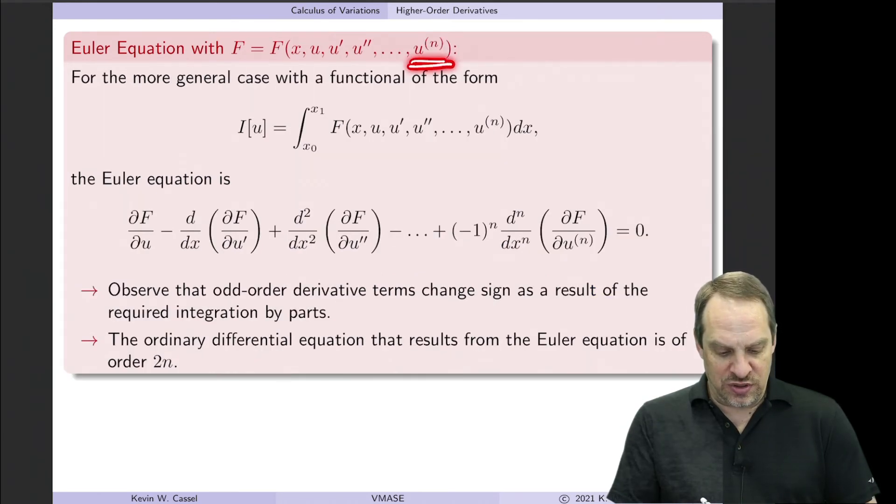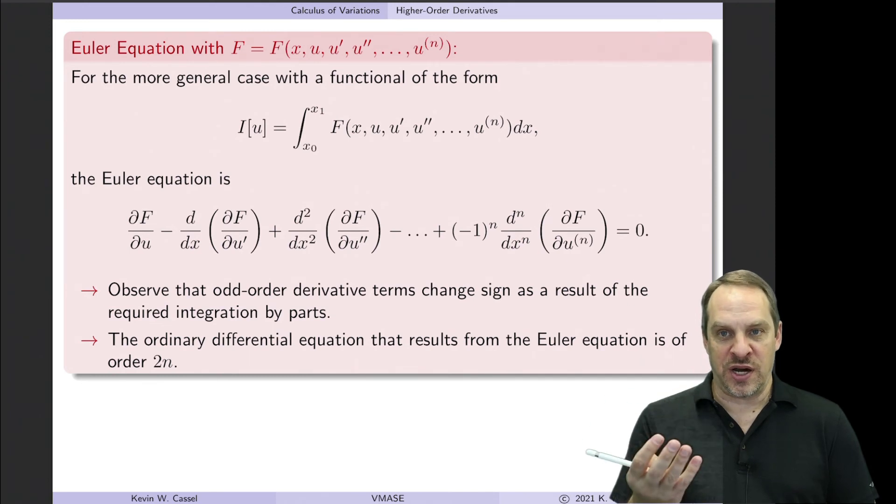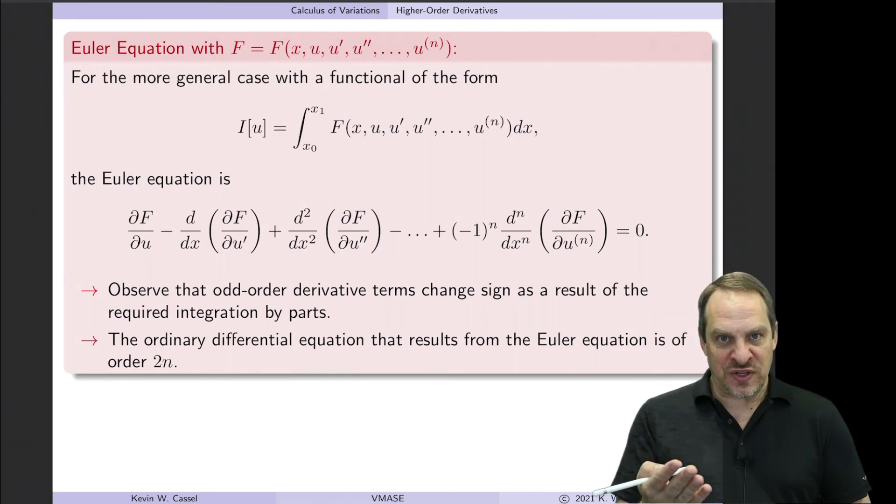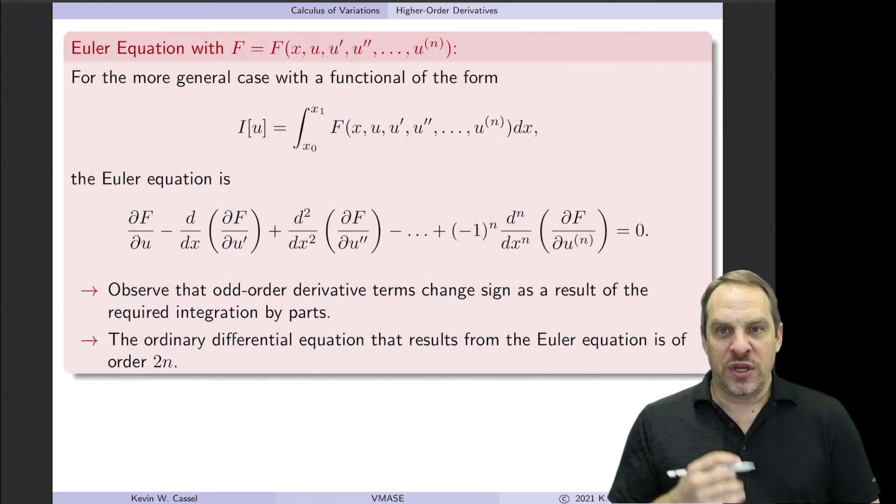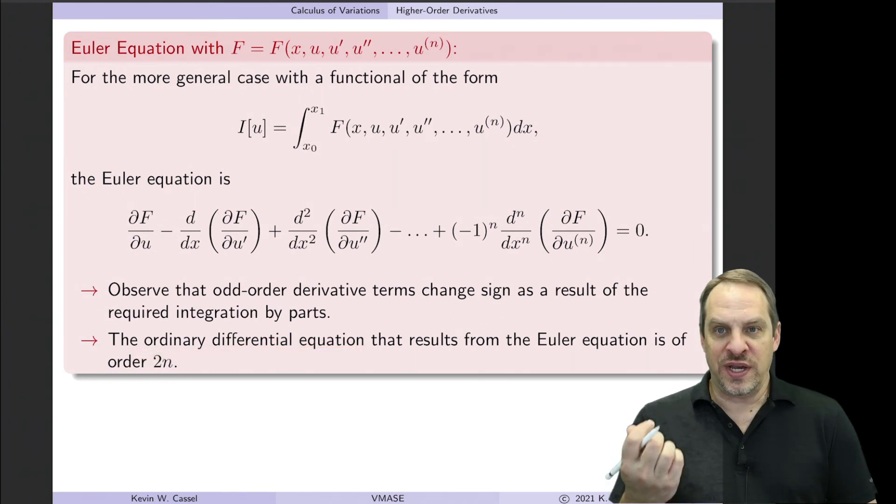Now, you can extend that to any order derivatives in your functional, the nth order derivative. And you just keep getting additional terms that correspond to those derivatives. So here's that last one for the nth derivative. And you get nth derivative here. And then this minus 1 to the n does the alternating signs. If it's an odd order derivative, then you have a negative sign because you've done an odd number of integration by parts. If it's an even order derivative, then you get a plus sign because you've done an even number of integration by parts. And you'll notice in all of these situations, the order of the ordinary differential equation that you get is always twice that of the highest order derivative in the functional.